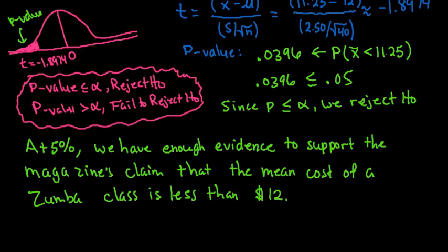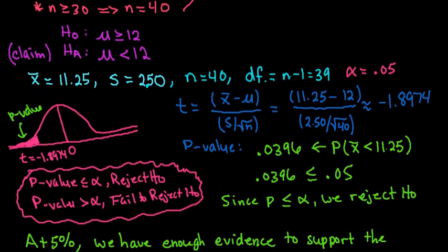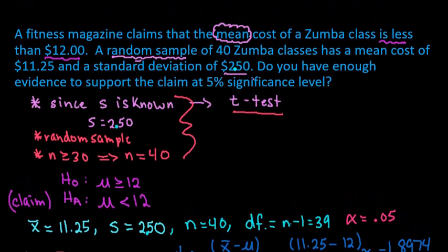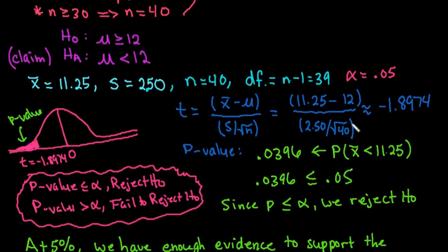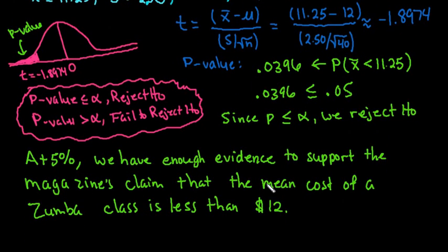The hypothesis testing is a long process, but once you get used to it, it's not that bad. You always check conditions, null and alternative, run the standardized test statistic for your test, draw a picture, either use p-values or rejection regions to come to your conclusion, and then rewrite your conclusion in context. As always, thanks for watching.